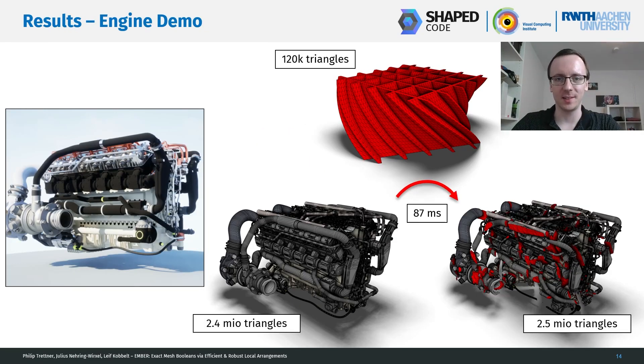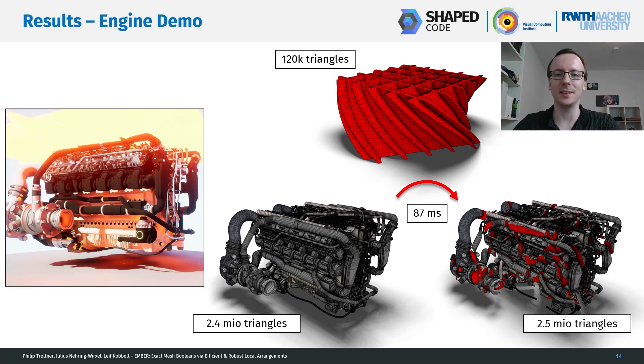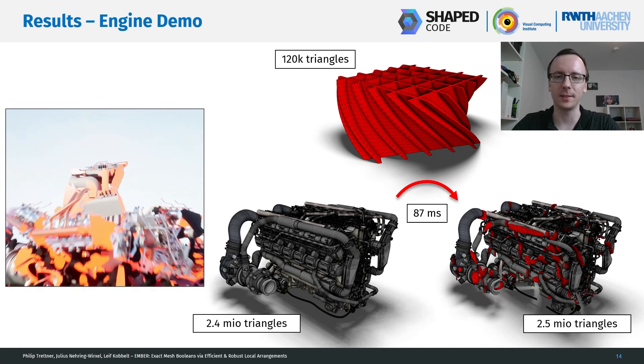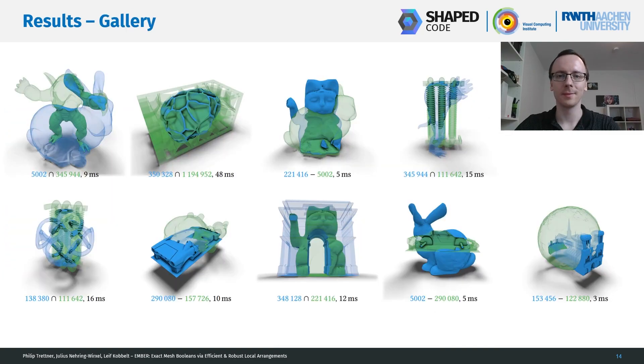Let us continue with a few results. This is the introduction example where we cut up a 2.4 million triangle mesh with a 120K triangle lattice grid. This on a consumer PC and a multi-thread implementation takes 87 milliseconds.